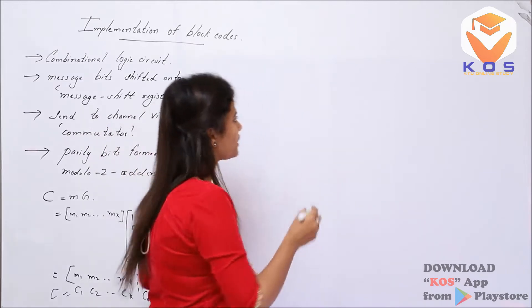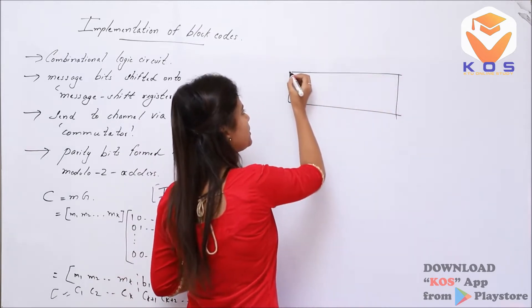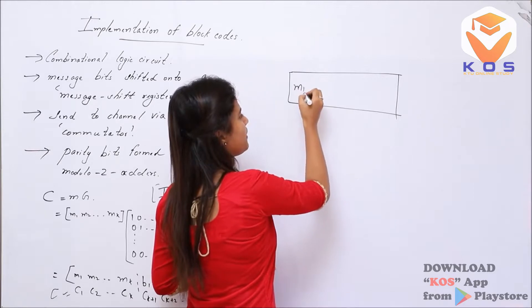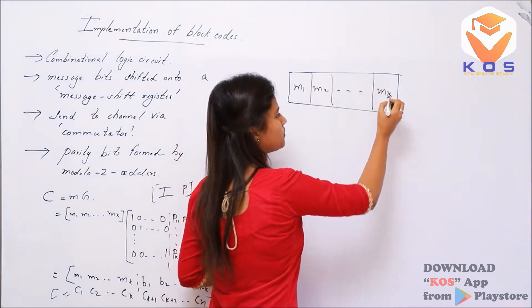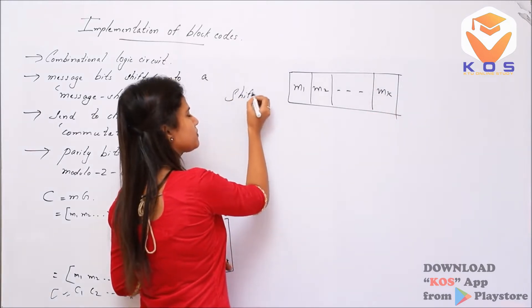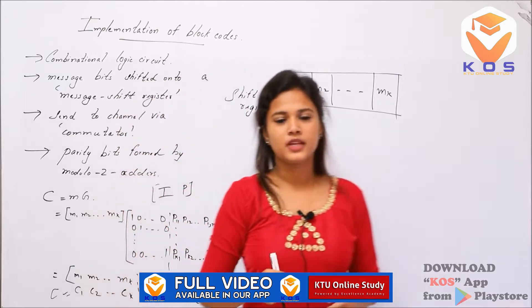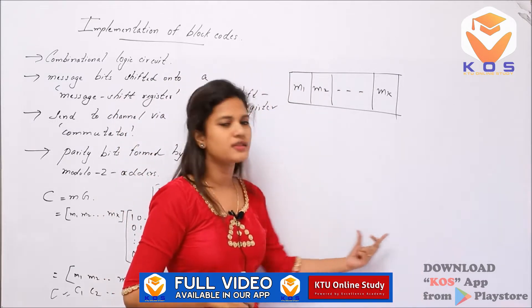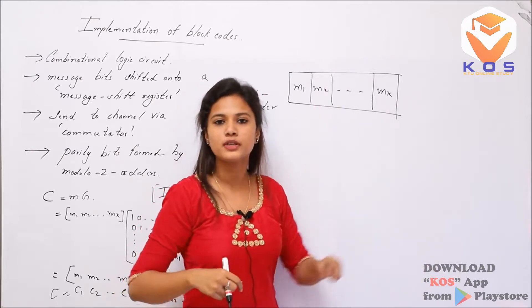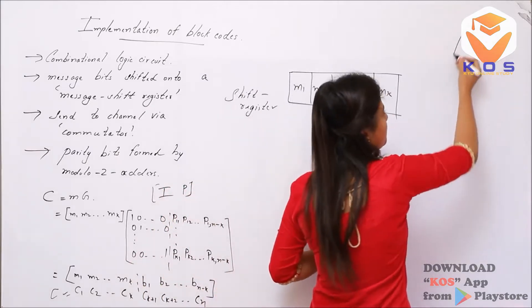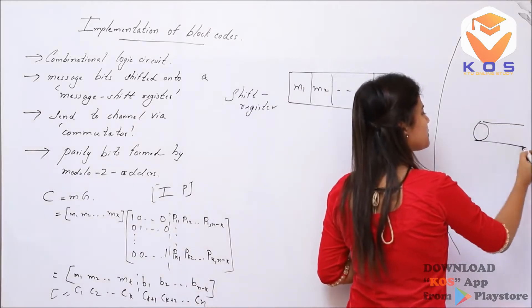I will use a shift register with values m1, m2, etc. This is my shift register. This is a system that will produce code words onto the channel.